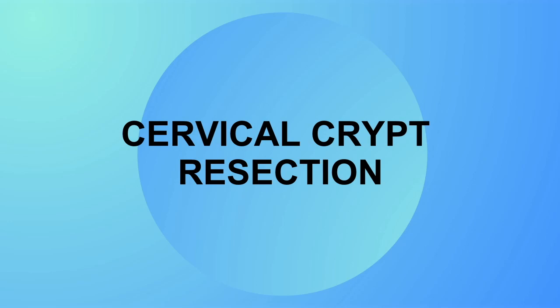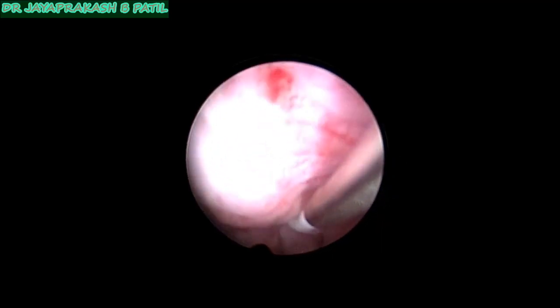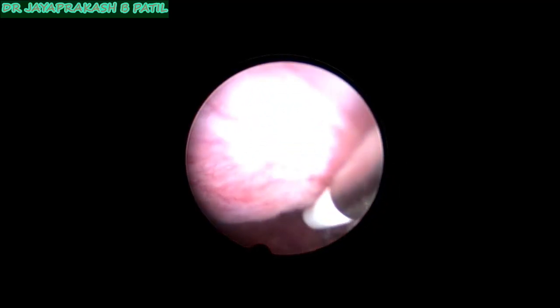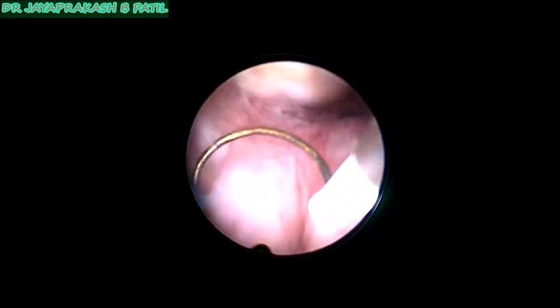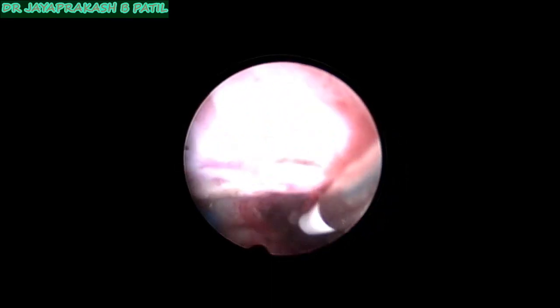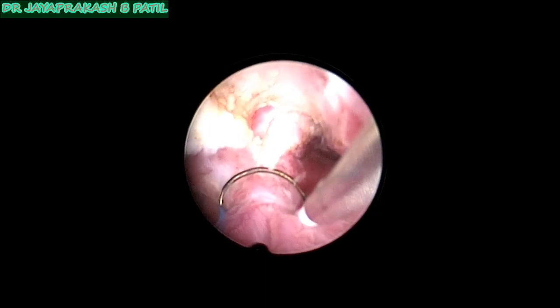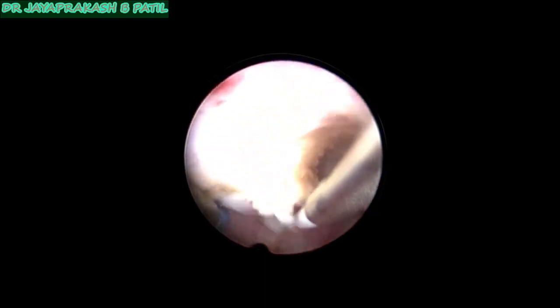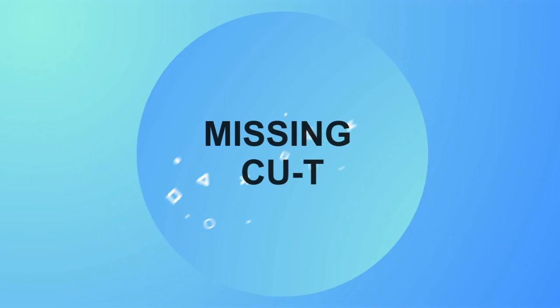Cervical crypt resection is a new concept propagated by Dr. Harish Vagasaya, a good friend of mine. This crypt sometimes obstructs the cervical canal so that HSG or IUI cannot be done. Such crypts can be removed on an OPD procedure with a thin resectoscope. Cervix is insensitive to sharp cutting, so patients cooperate well.